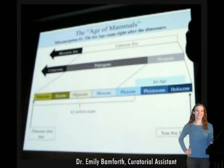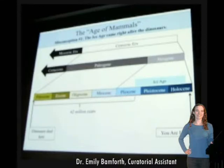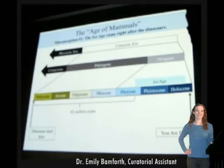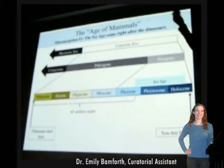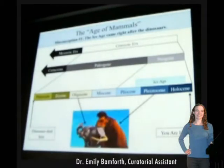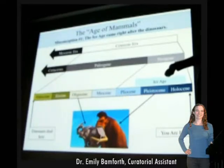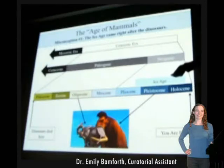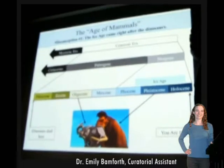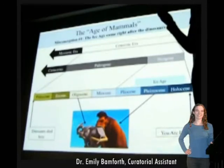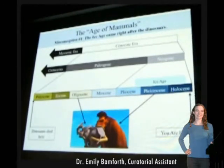Has anyone seen the Pixar movie Ice Age? It's one of my favorites, but it does something that a lot of dinosaur movies do — it lumps all the mammals from these time periods into one movie. Manny the Mammoth is probably an Imperial Mammoth, which lived during the Pleistocene, whereas the ground sloth character is from a different time. This is where some of those misconceptions come from — movies like Ice Age that lump all these mammals together.